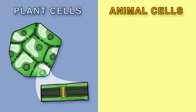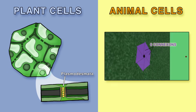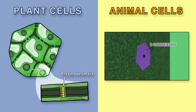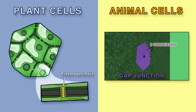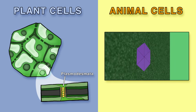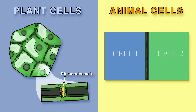Plant cells also have plasmodesmata, which are channels that connect two plant cells. An analogous structure in animal cells is the gap junction, which connects the cytoplasm of two adjacent cells.